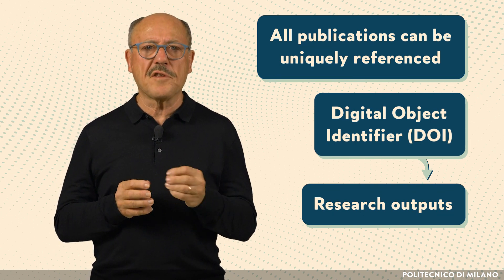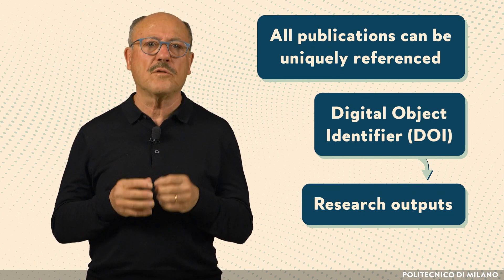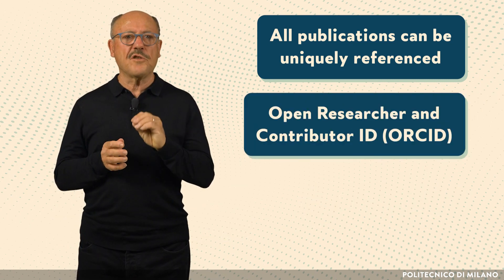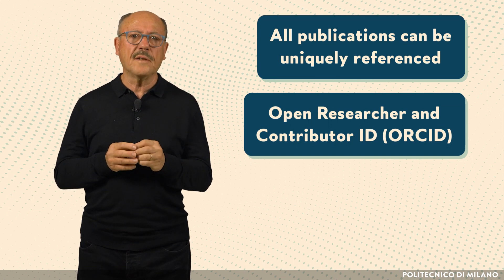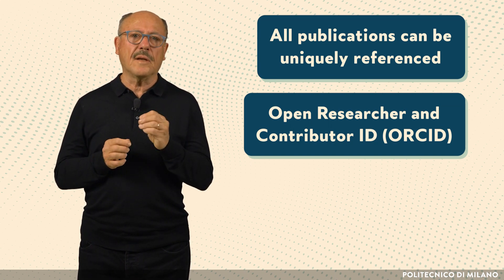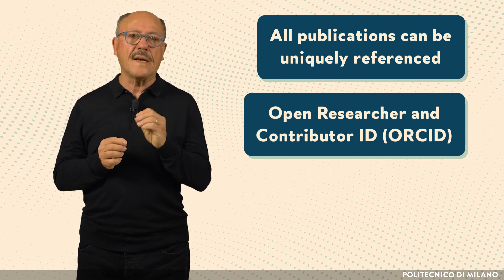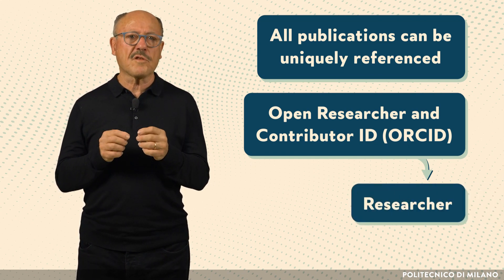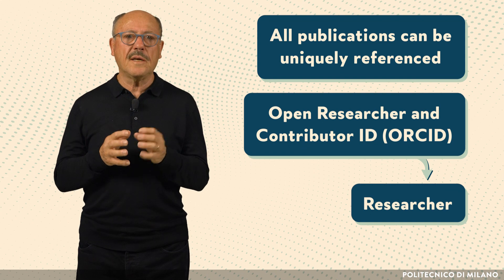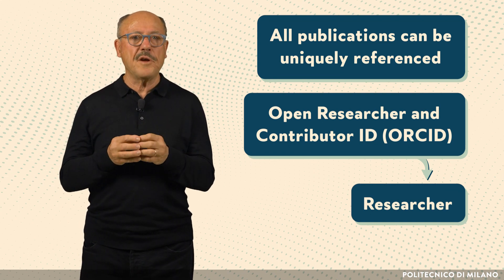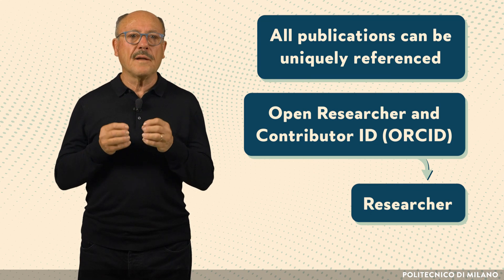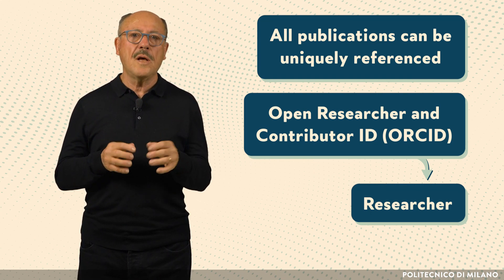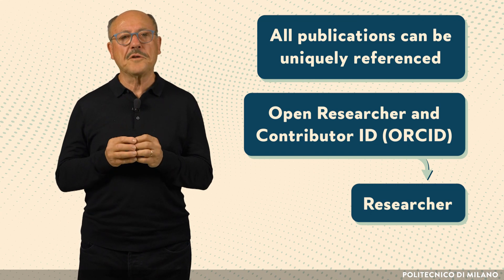A DOI may be resolved to access the object to which it refers. The Open Researcher and Contributor ID, ORCID, is a persistent digital identifier that uniquely identifies a researcher. It has been introduced to support integration in key research workflows such as manuscript and grant submission, and supports automated linkages between a researcher and his or her professional activities.